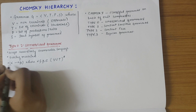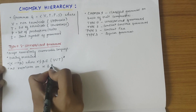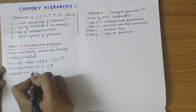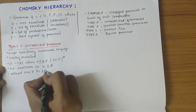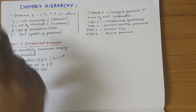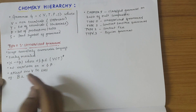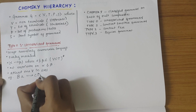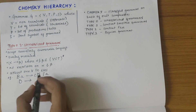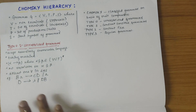In unrestricted grammar there is no restriction on alpha and beta, but one rule is that there has to be at least one non-terminal on the LHS, that is in alpha. For example, BA derives CD, or a single non-terminal can derive lambda, or DB, or anything. This is type 0 grammar.